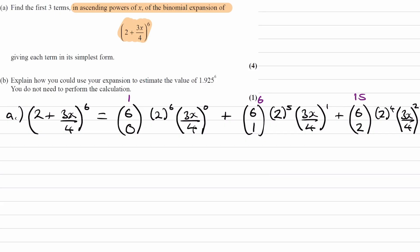2 to the power of 6 is equal to 64. 2 to the power of 5 is 32. 2 to the power of 4 is 16. Anything to the power of 0 is just 1. This remains as 3x over 4, and the final one would be 3x over 4 squared, which is 9x squared over 16.